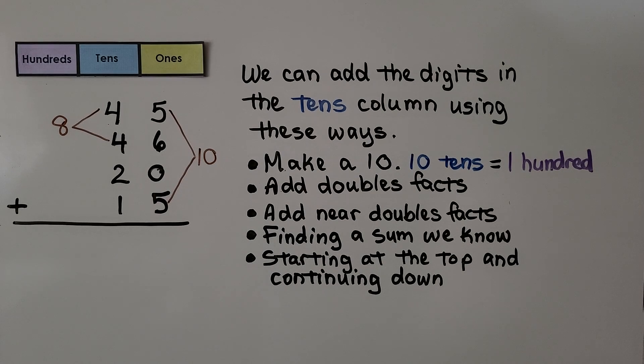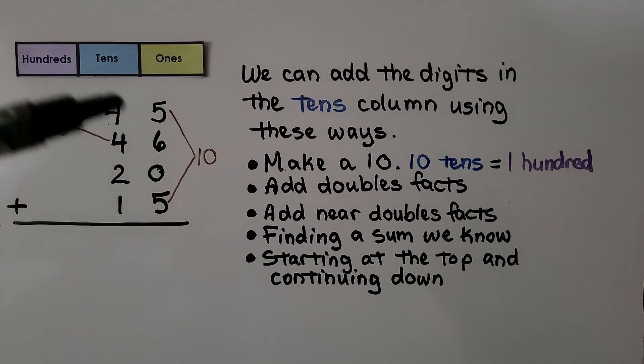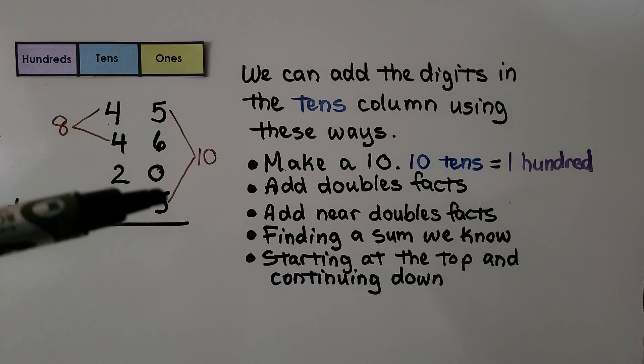We can add the digits in the tens column using these ways: make a 10—10 tens are equal to 100—add doubles facts, add near doubles facts, finding a sum we know, and starting at the top and continuing down. I see a doubles fact. 4 plus 4 is equal to 8, 2 more is 10, and 1 more is 11.